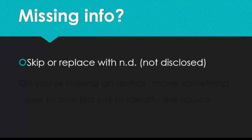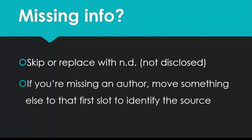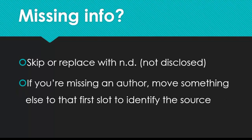Like with in-text citations, if you're missing information, you can often replace it with 'n.d.' or 'not disclosed.' The exception is if you're missing an author — you need to move another piece to that first slot so the citation doesn't begin with the publication year. In this case, you could use either the publisher or a shortened version of the title, depending on what you have.